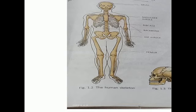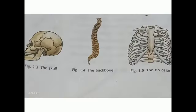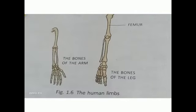Let me explain once again. An adult has 206 bones. These bones are of different shapes and different sizes. The human skeleton consists of the skull, the backbone, the rib cage, and two pairs of limbs. The forelimbs are arms and the hind limbs are legs. These limbs are attached to pairs of girdles — shoulder girdle and hip girdle respectively.